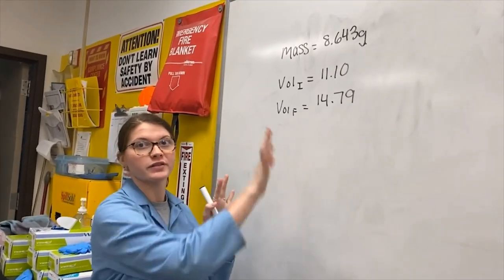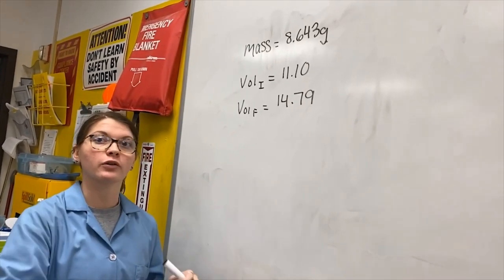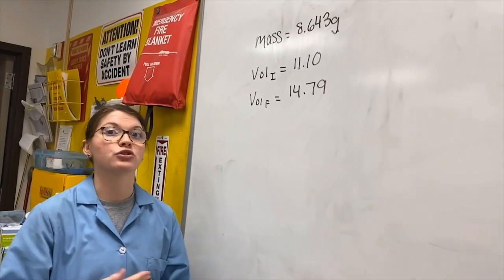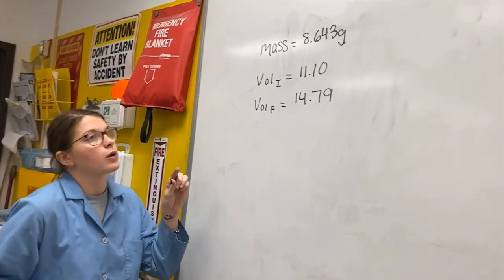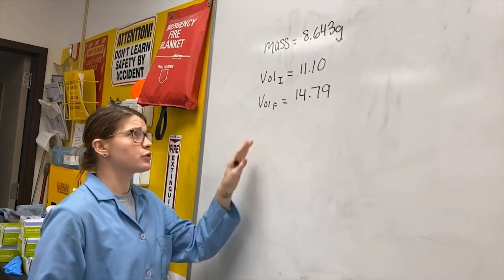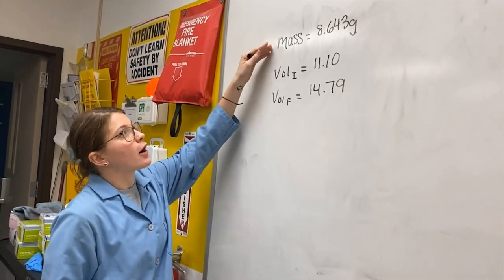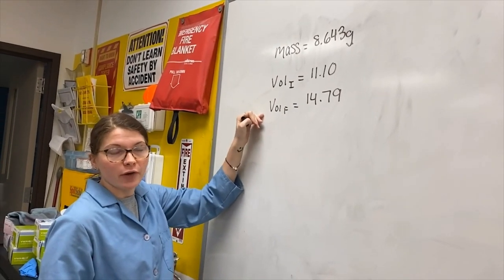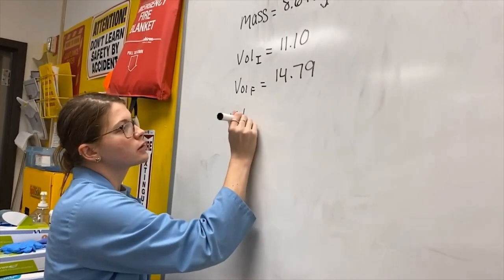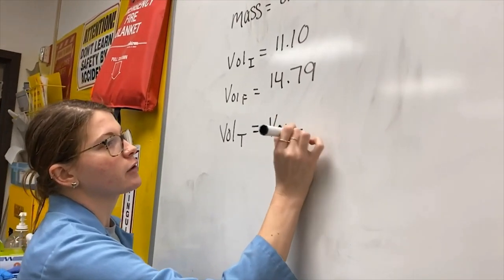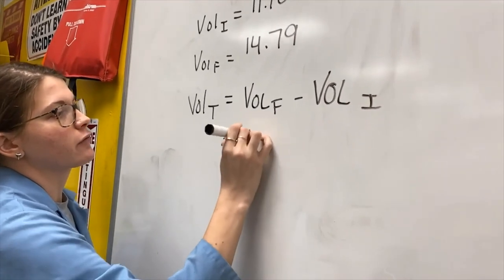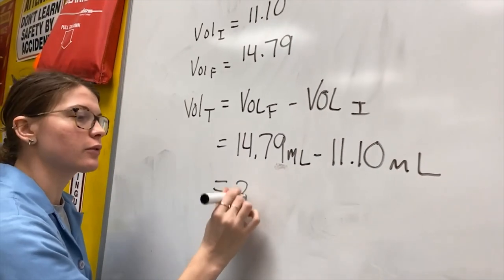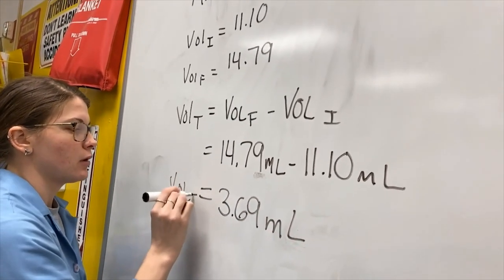This is fake data — not the math you'll use — just to help you learn how to do it. You're going to put the real data into your own data table and submit in your lab report. Our mass of the known substance here is 8.643. We have an initial volume and a final volume. To find our total volume, we take volume final minus volume initial: 14.79 milliliters minus 11.10 milliliters equals 3.69 milliliters. That is our total volume of that substance.